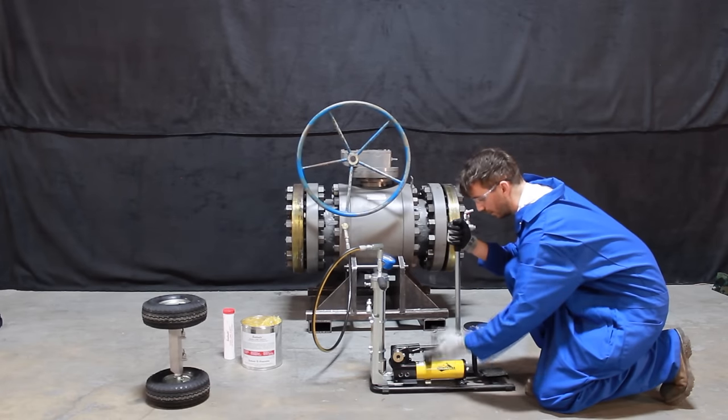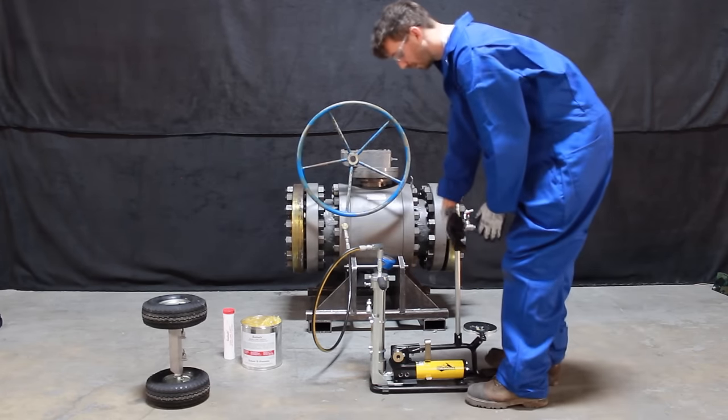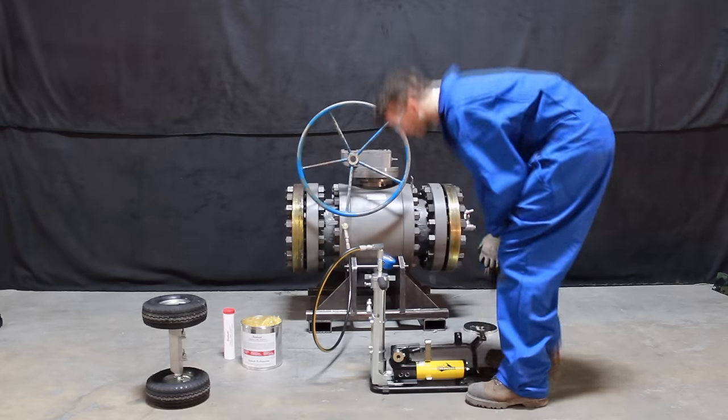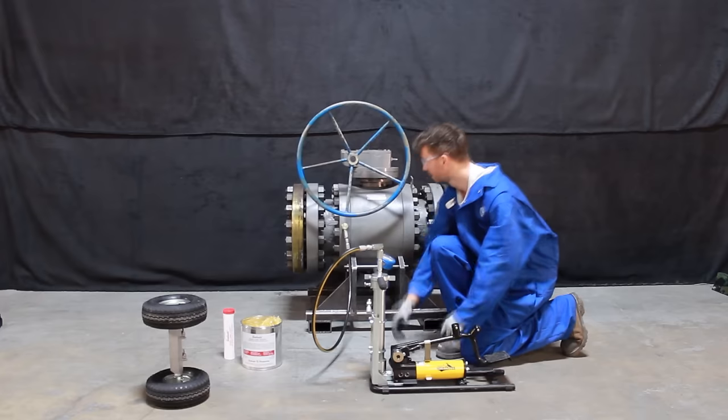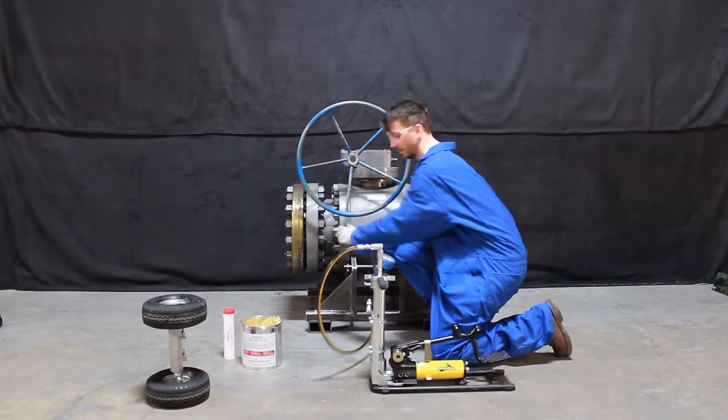Once you are finished pumping, slide the retainer back over the pump pedal. Relieve the residual pressure using the release pedal. Once the pressure has dropped, remove the coupler from the valve fitting.